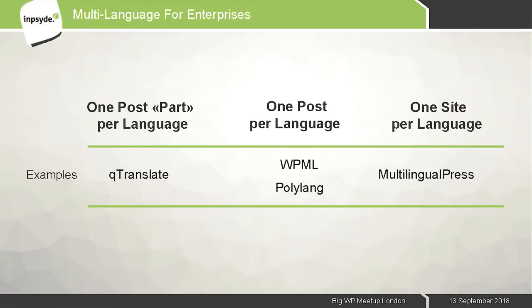Some examples of existing plugins: for the one post with separators approach, we have QTranslate, which is the oldest plugin that did something like this, though it probably doesn't exist anymore — there's an evolution called QTranslate-X or something like that. For the one post per language approach, we have WPML, probably the most popular solution right now, and Polylang. Finally, for the one site per language approach, we have Multilingual Press, which — full disclosure — is developed by Inpsyde.